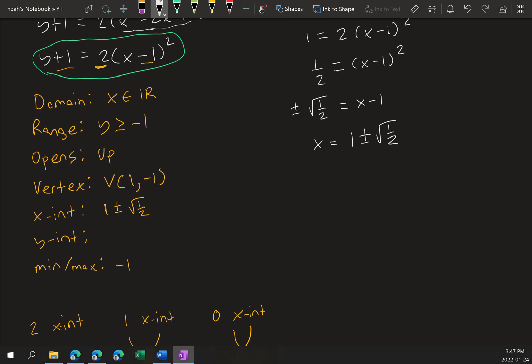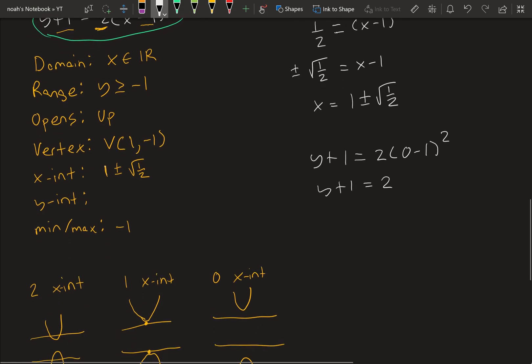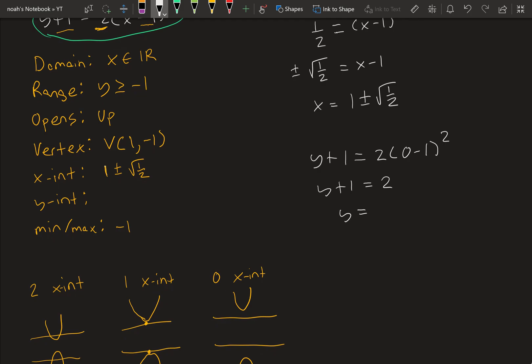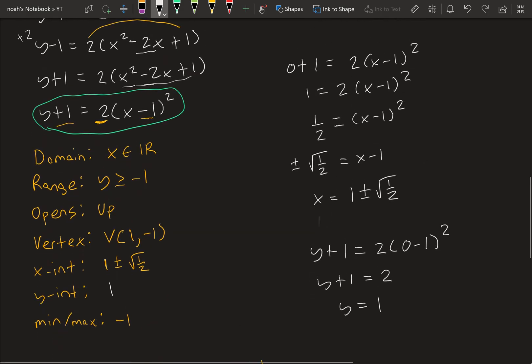And then for the y-intercept, we want to make x equal to 0. So we've got y plus 1 is equal to 2, 0 minus 1 squared. Minus 1 squared is 1, so this becomes 2, and y is equal to 1. So the y-intercept is 1.